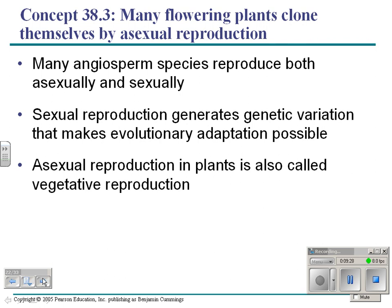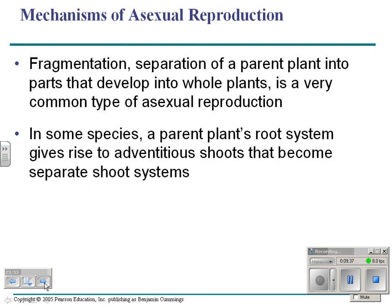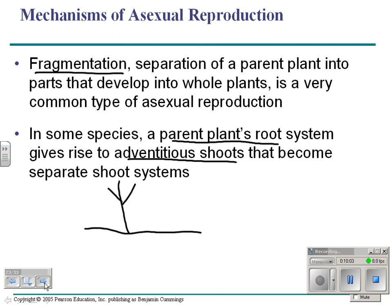Many angiosperms can also reproduce asexually, or vegetatively. A plant can fragment — you can cut up its parts, scatter them, and they develop into whole plants. In some species, a parent plant's root system gives rise to adventitious shoots that become separate shoot systems. For example, a forsythia shrub in my garden has branches that droop to the ground, grow underground roots, and then spring up as new plants — so I have to keep cutting them off constantly.